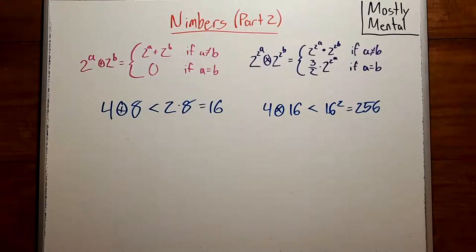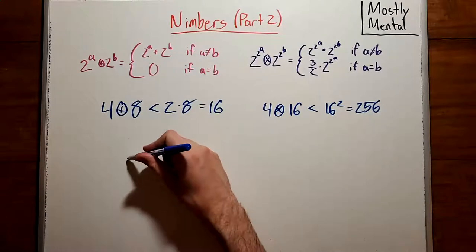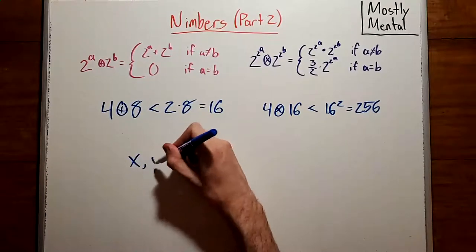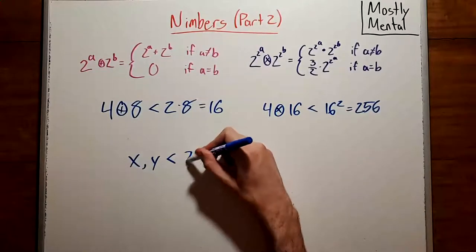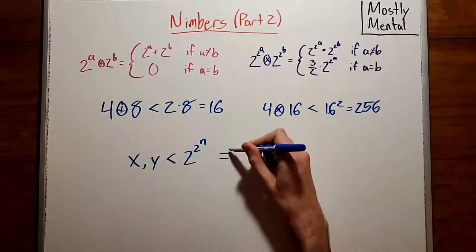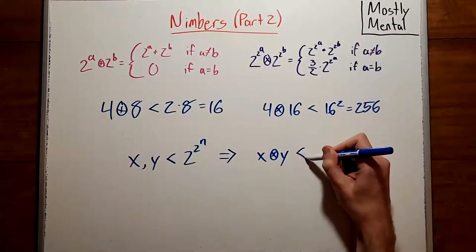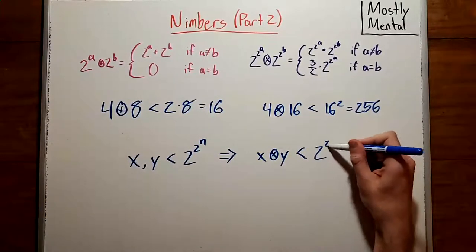And any nimber can be written as the sum of powers of 2, which is to say, the sum of products of Fermat 2 powers. So using these two rules and a bit of induction, we can show that if x and y are less than some Fermat 2 power, then that implies that x times y is also less than that 2 power.